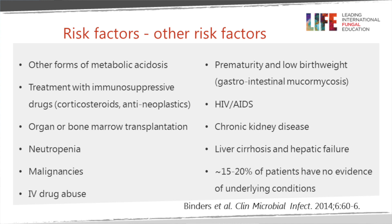Very premature and low birth weight babies have a higher risk for gastrointestinal mucormycosis, and cutaneous mucormycosis if there's a break in the neonatal environment. It's a rare but very severe disease in HIV-AIDS, usually with an additional co-factor such as diabetes or neutropenia. Chronic kidney disease due to aluminium overload, liver cirrhosis with iron overload are also risk factors, and about 15-20 percent of patients have no clear underlying reason.